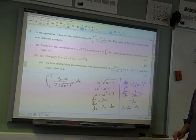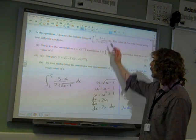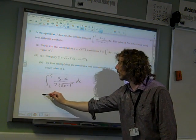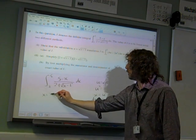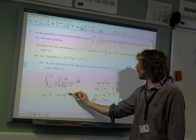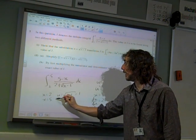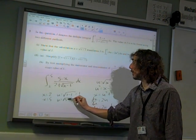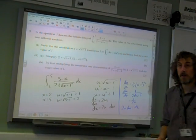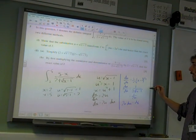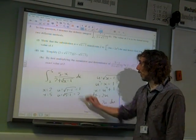We've got to change the limits as well, haven't we? So we've also got to do, if x equals 2, u equals the square root of 2 minus 1, which is 1. And if x equals 5, u is the square root of 5 minus 1, which is 2. Which gives us the integral from 1 to 2.